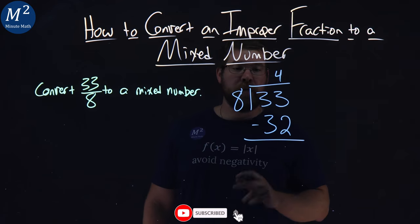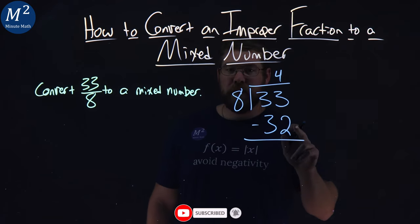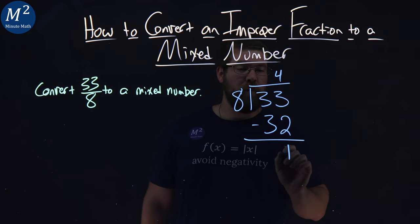We subtract now. 33 minus 32 comes out to be 1.